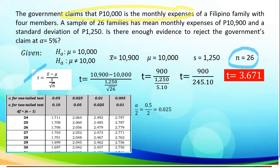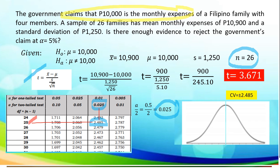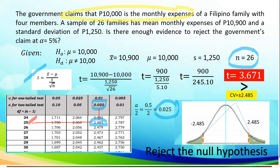Using the t-table with level of significance 5%, we divide 0.05 by 2 to get 0.025 for the two-tailed test. The degree of freedom is 26 minus 1 equals 25. Locating the critical value, we have 2.485, which is plus or minus since this is a two-tailed test. Illustrating on the standard normal curve with critical values of positive and negative 2.485, since the computed value of 3.671 is greater than the critical value, we reject the null hypothesis.